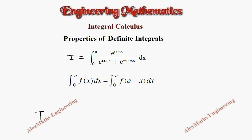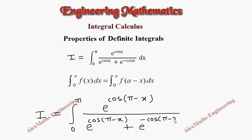So we get I equal to integral 0 to pi. Numerator e power cos of every x is replaced as pi minus x, divided by e power cos of pi minus x plus e power minus cos of pi minus x dx.